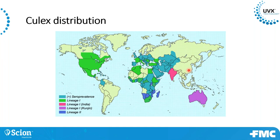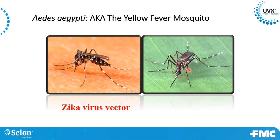Culex is distributed throughout most of North America. Moving on to Aedes aegypti — the yellow fever mosquito — dark black in color with white bands on their legs. On the front of the thorax there's a violin-like design, which distinguishes it from Aedes albopictus, which has a slightly different design. Aegypti is also a Zika vector.